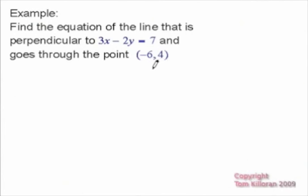To find this equation, we're going to use the point-slope form of the equation of a line, and the two things we need are a point, which we have, and a slope, which we can find using this equation.